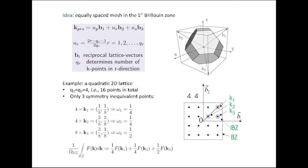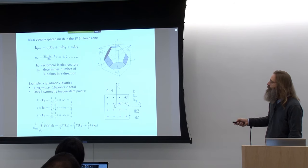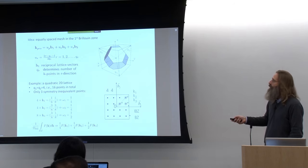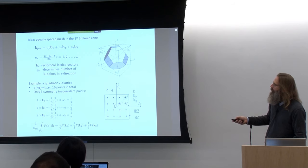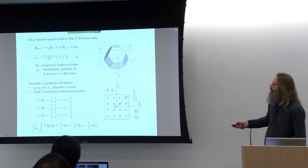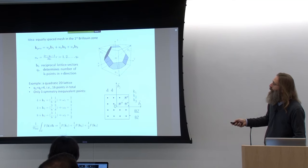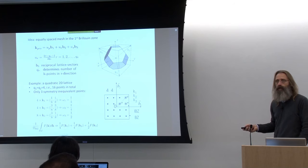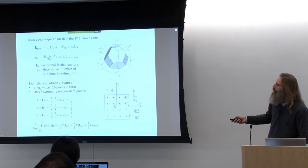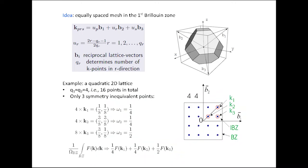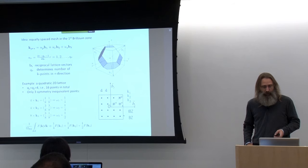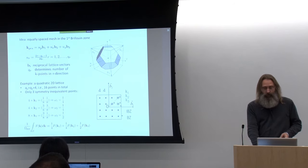What is commonly called the irreducible wedge of the first Brillouin zone — we have to compute these and then adjust the integration weights accordingly. So we set up a regular mesh, then reduce it by means of the symmetry of the lattice, ending up with a few points in the irreducible part of the first Brillouin zone. For those points we actually solve the Kohn-Sham equations.